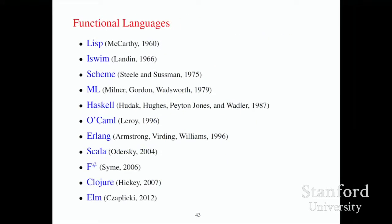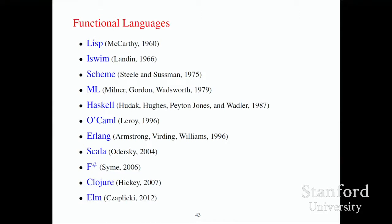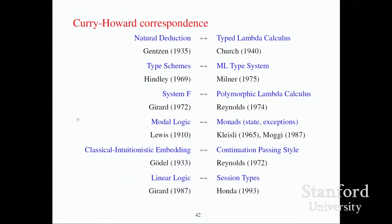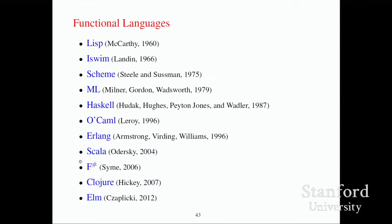When Milner came up with his type inference algorithm for ML, it turns out it had already been done by Hindley — the system is now called Hindley-Milner. When Reynolds came up with polymorphic lambda calculus, corresponding to generics in languages like Java, it had already been discovered by the logician Girard — now often called the Girard-Reynolds calculus. So what is Curry-Howard? It's a double-barreled name that predicts the existence of other double-barreled names, such as Hindley-Milner and Girard-Reynolds. Pretty much every functional language you can name has lambda calculus at its core, and this is my invitation to you to go off and learn one of these languages.